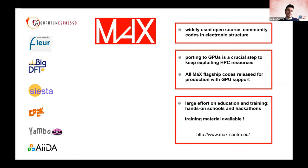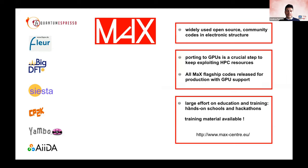Putting it all together: here are the MAX flagship codes currently supported. MAX works on widely used open-source community codes for electronic structure, and porting to GPUs and improving parallel performance is one of the key actions. Good news is that all these codes have been released in production with GPU support, so we are actually ready to exploit these machines. A large effort is also spent on education and training, with a lot of training material available at different levels.